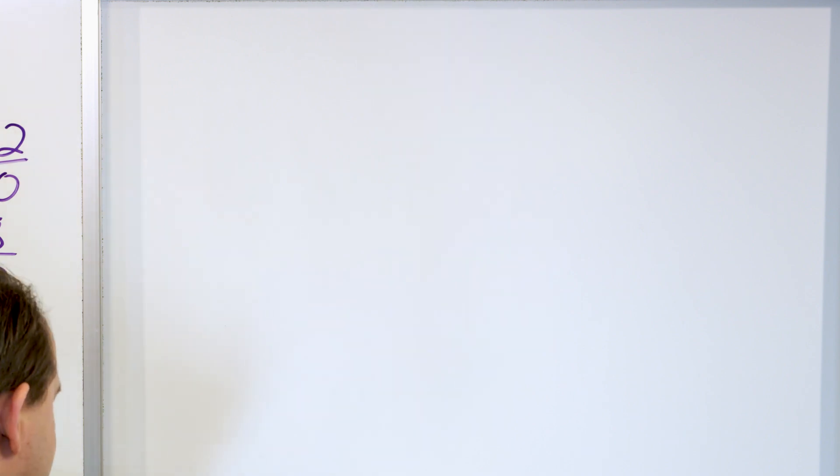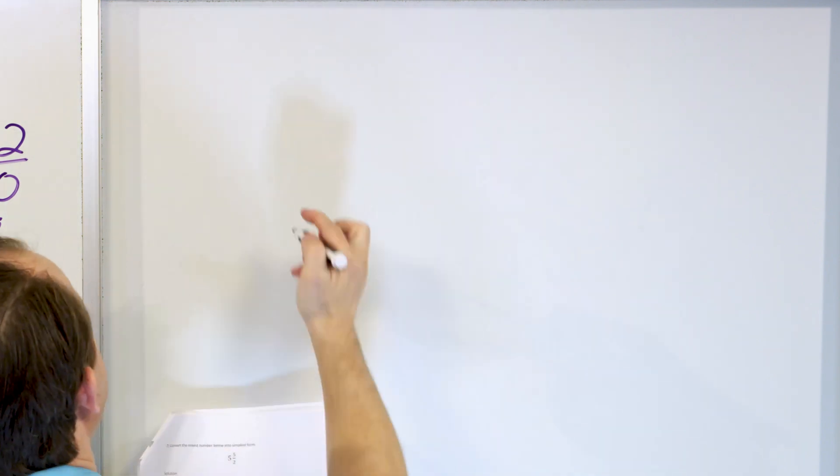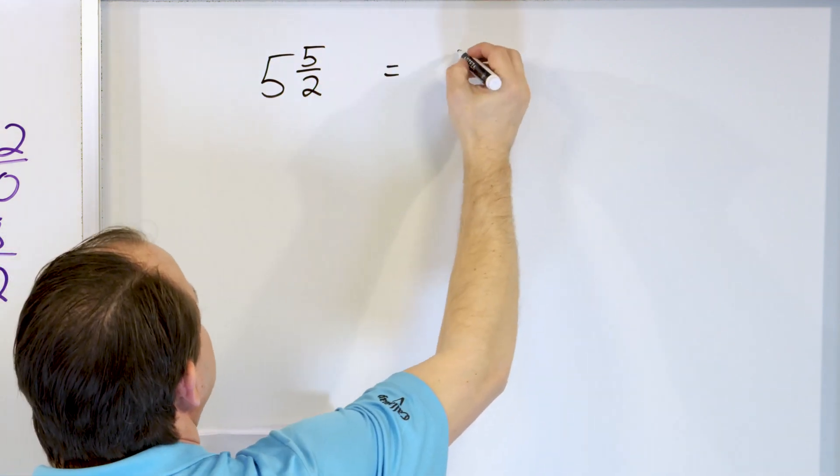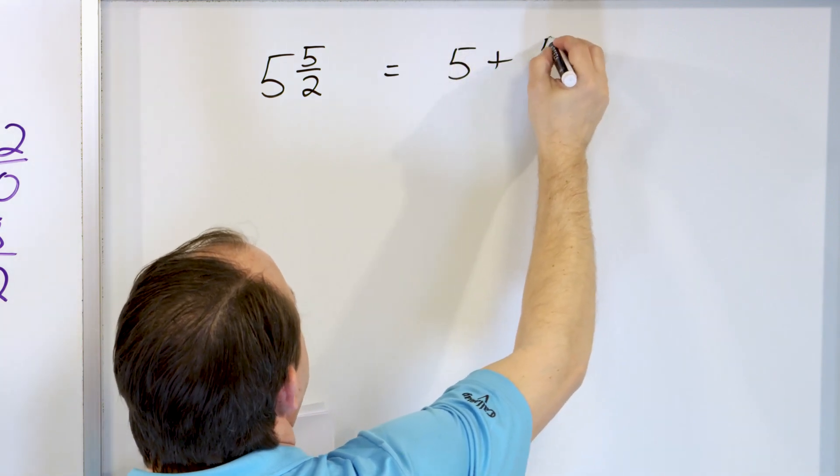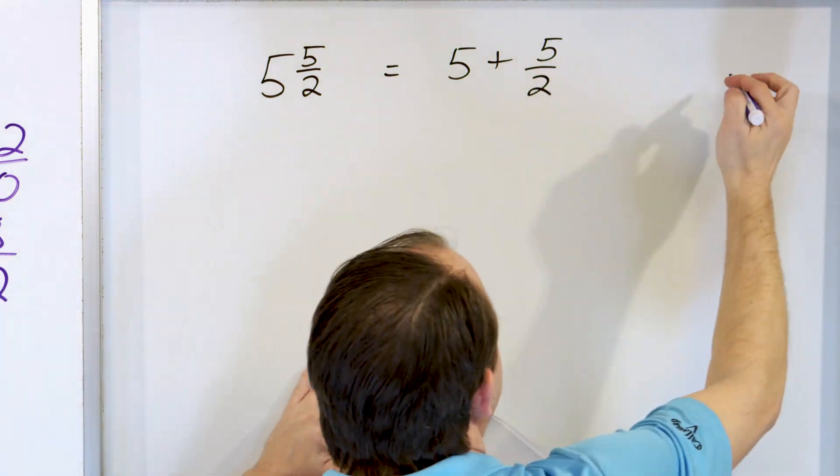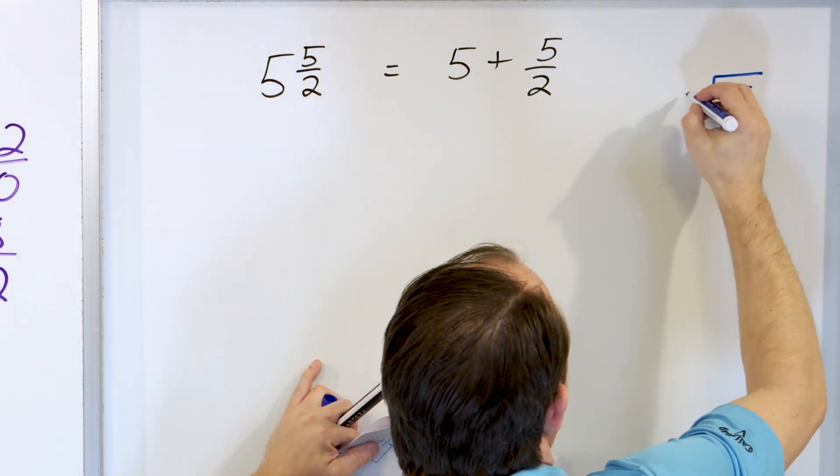Now let's take a look at problem number 7. What if we have 5 and 5 halves? Again, improper fraction. So it'd be like 5 plus whatever 5 halves works out to be. So then we go over here and let's figure out what 5 halves is. Take the 5 and divide it by 2.